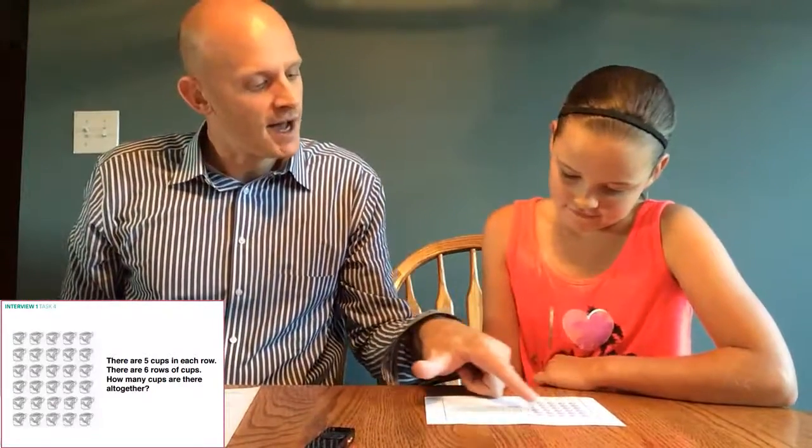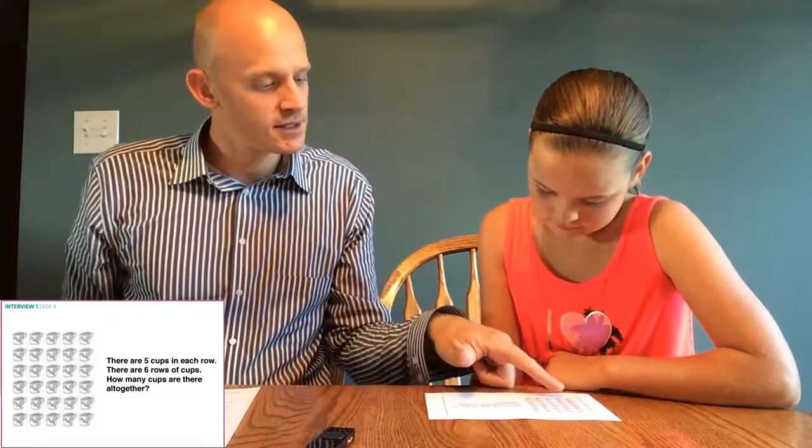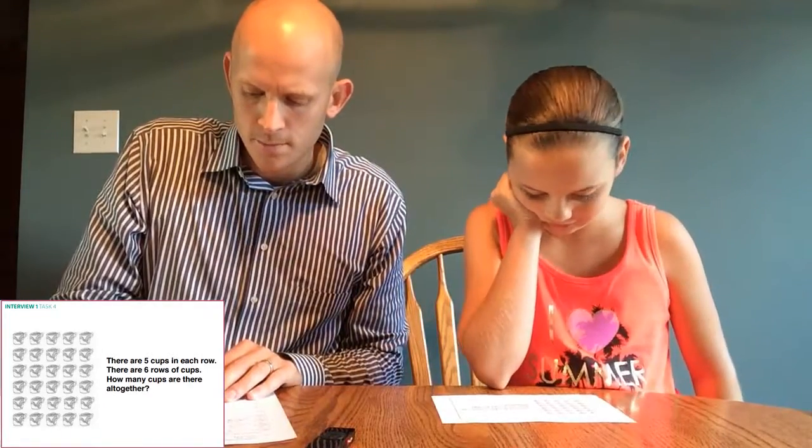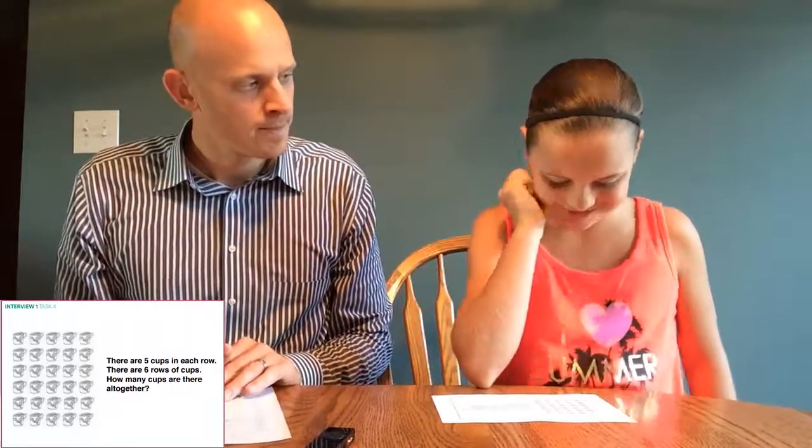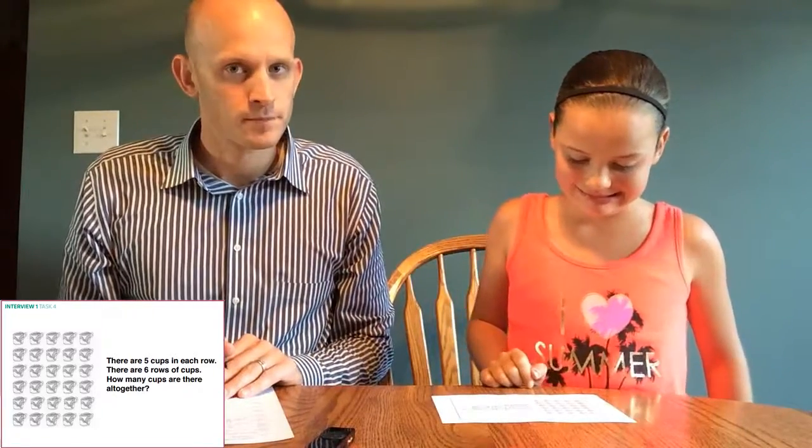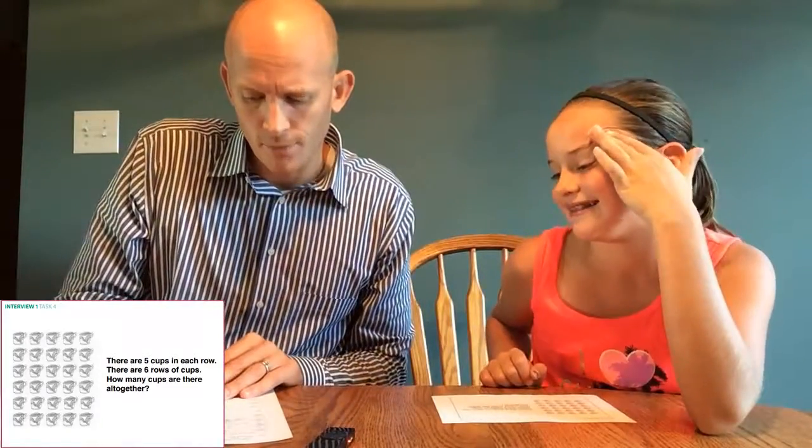There are five cups in each row. There are six rows of cups. How many cups are there all together? Thirty. And how did you come up with thirty? Because I know five times six is thirty. I just know five times six is thirty. Five times six is something, you know? That's good. Thank you.